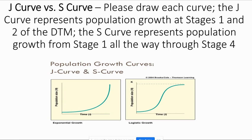When you do your examples, think of countries that represent the J-curve today — something like Mali, Niger, Ivory Coast, Sierra Leone, Namibia, or pretty much anything in sub-Saharan Africa. For the S-curve, think of the United States or the United Kingdom — countries that have basically gone down to zero population growth (ZPG).